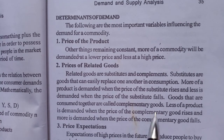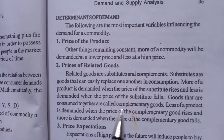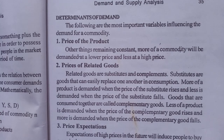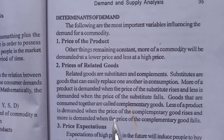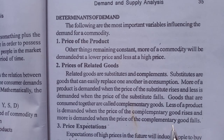Goods that are consumed together are called complementary goods. Less of a product is demanded when the price of the complementary good rises, and more is demanded when the price of the complementary good falls.